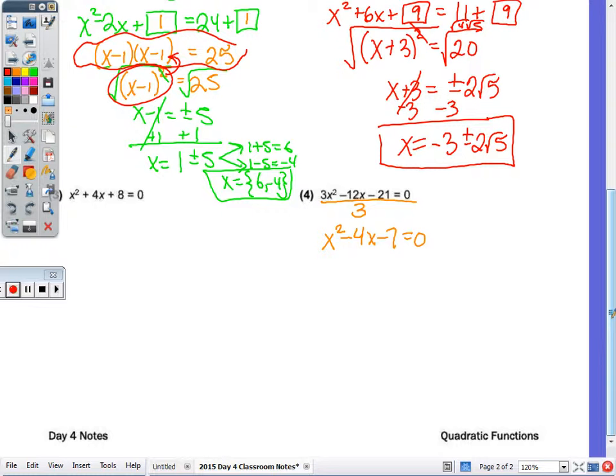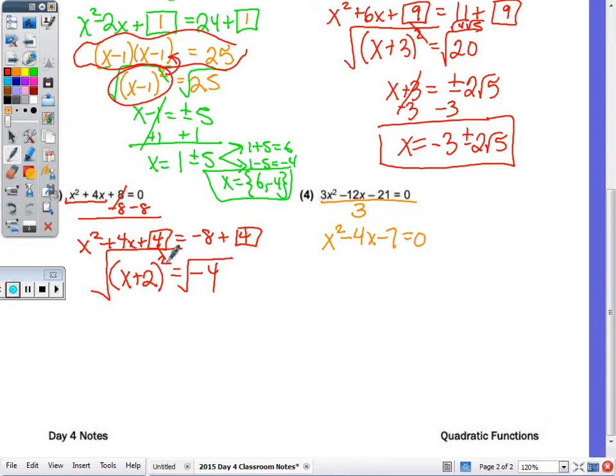Number 3. x² plus 4x. Well, half of 4 is 2. 2 squared is not 8, so I need to make my perfect square trinomial by moving over the c value. And we mentioned half of 4 was 2. 2 squared is 4. So I end up with x plus 2 times x plus 2, or x plus 2 squared, equals negative 4 square root. So x plus 2 equals plus or minus 2i. Subtract the 2. x equals negative 2 plus or minus 2i.